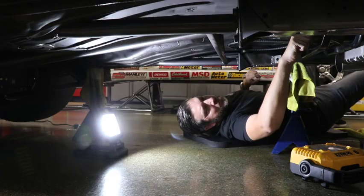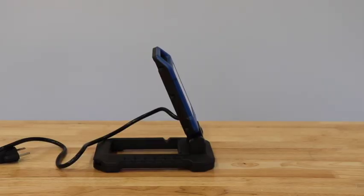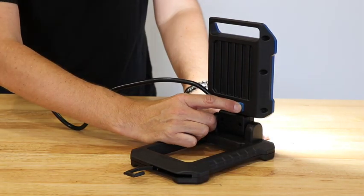The WorkLite X has a 3.3-foot power cord for plenty of reach. It operates with an easy push-button on-off power switch on the back.